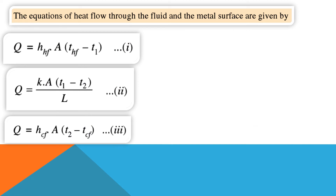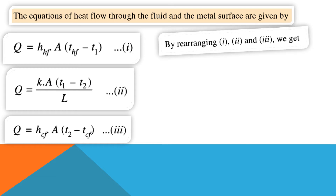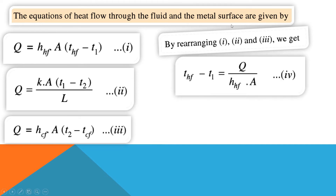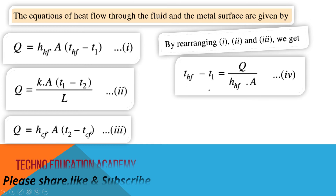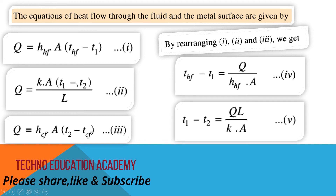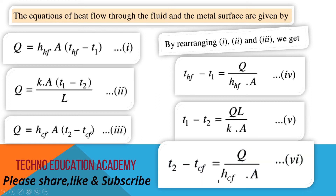In the previous slide we discussed equations 1, 2, and 3. By rearranging them, we make the temperature difference the subject. From equation 1: T_HF minus T1 equals Q upon H_HF·A. From equation 2: T1 minus T2 equals Q·L upon KA. From equation 3: T2 minus T_CF equals Q upon H_CF·A.